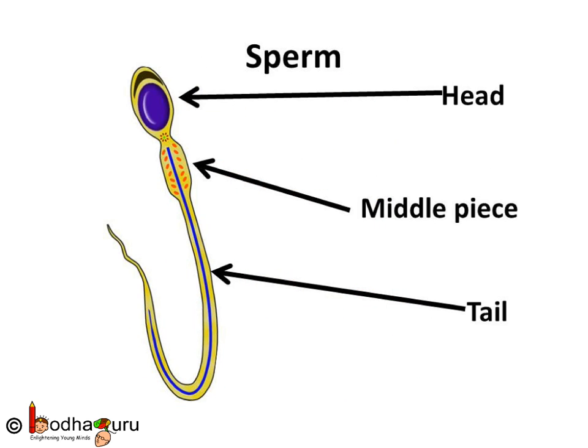If you look at the structure of a sperm, sperms are very small and look like a tadpole. Each sperm has a head, a middle piece, and a tail. But a sperm is a single cell. The tail of the sperm helps it to move.